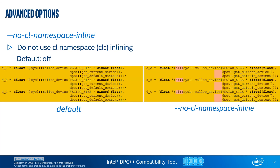The last option shown in this presentation is enabled in the Compatibility Tool by default. The namespace generated by the tool is "sycl" and not "cl::sycl". The "--no-cl-namespace-inline" option will force the tool to use the full namespace. Note that there are other interesting options available in the tool you may use to control the code migration.